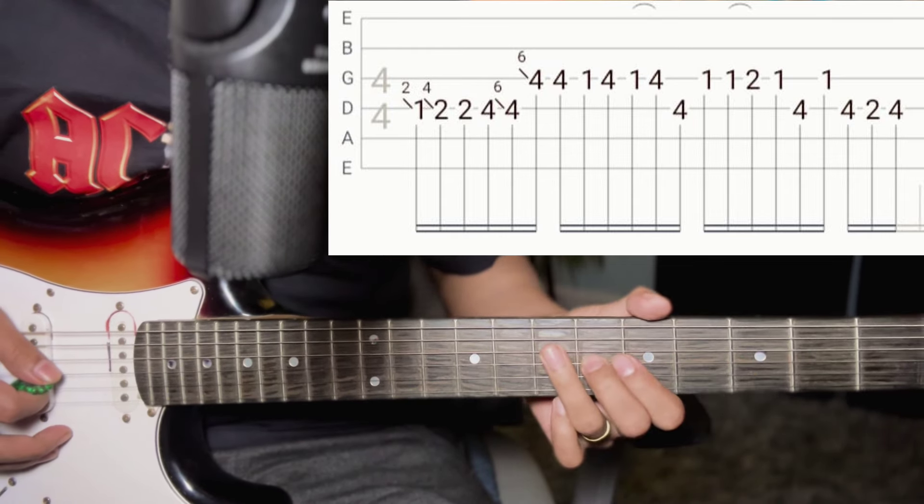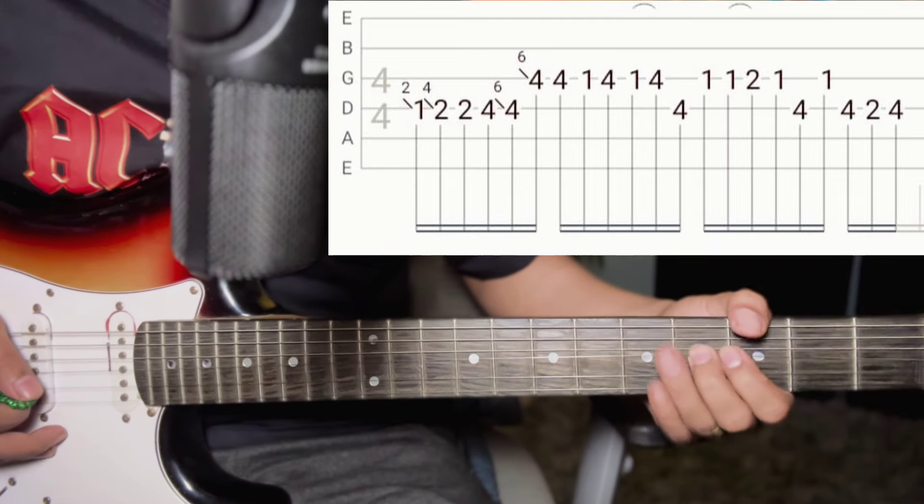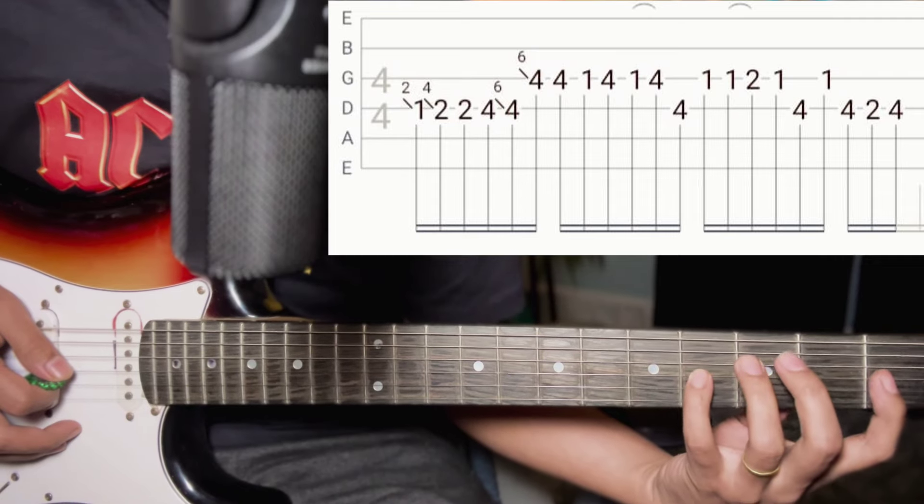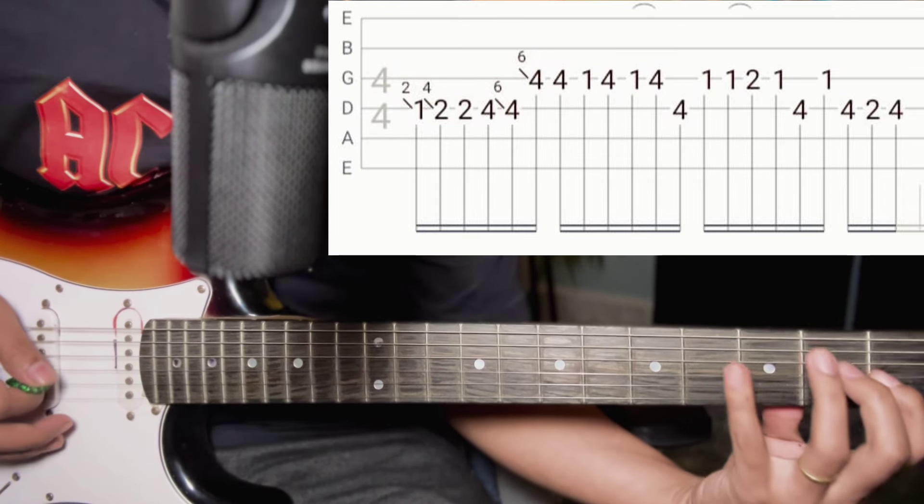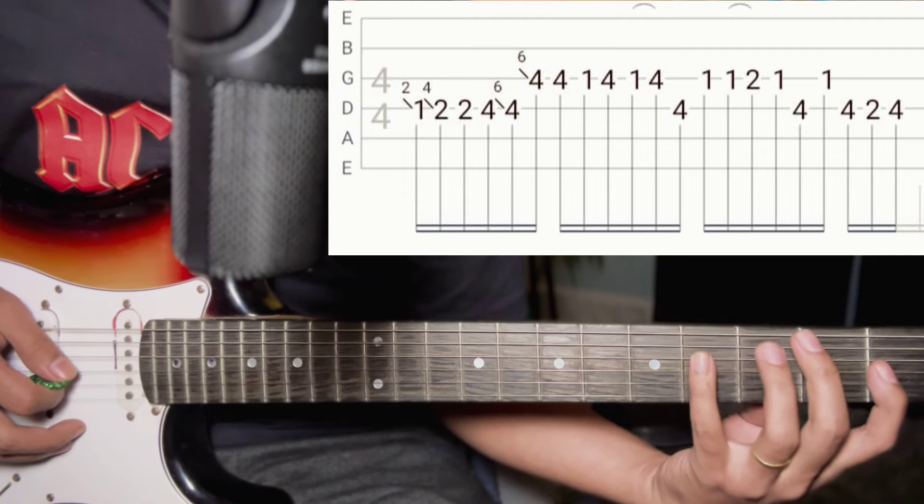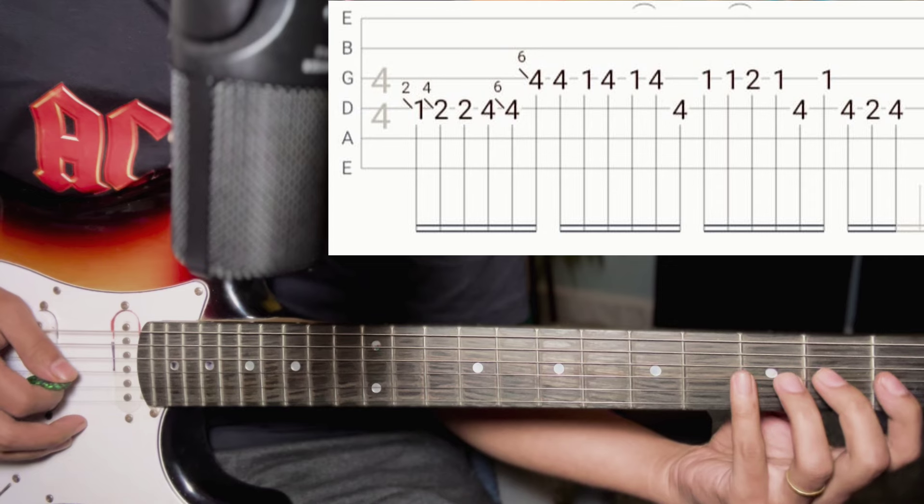Third string for the sixth string sliding. Four, one four, one four hammer-on. Fourth string four, third string one, one one two hammer-on, then one.